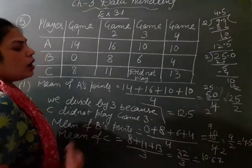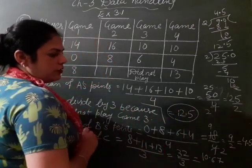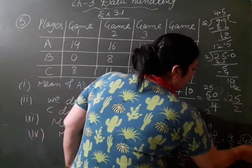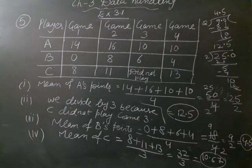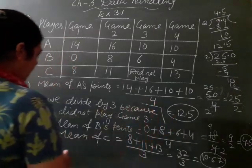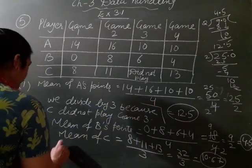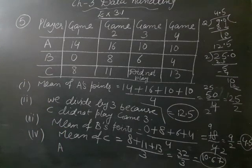Now we have to check whose performance is better. 12.5, 4.5, 10.67. So you have to whose performance is best. So A ki performance sabse zyadha hai so A is the best. A has best performance. Clear?